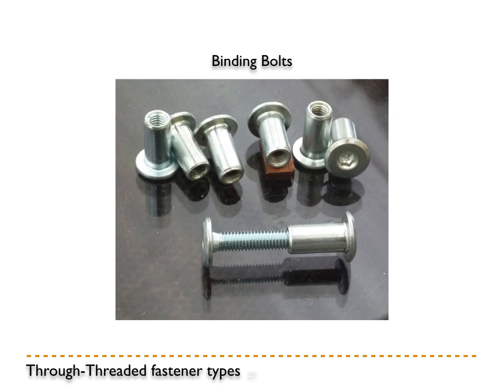Moving on to through-threaded fastener types — these are binding bolts. They are similar to nuts and bolts except they can be used to bind paper together to make a book — hence the name. You can get them so that the threads are completely covered inside the nut so the threads won't risk tearing the paper.